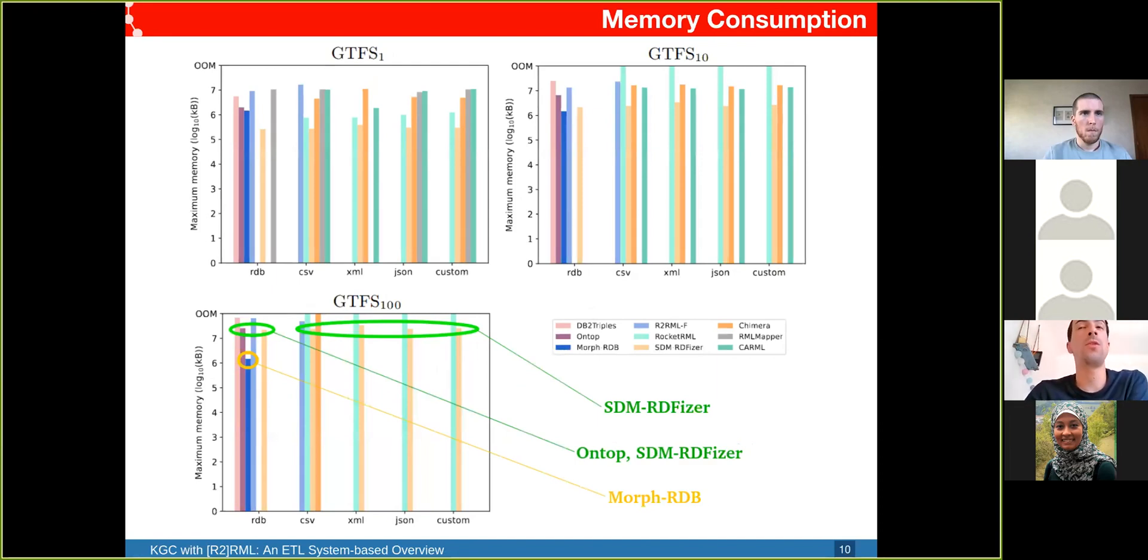For memory consumption, we measured it with the peak of maximum memory used. In scaling factor 100, Morph-RDB gave better results, but I put it in yellow because it is not very correct as we will see in the next slide. For relational databases, OnTop and SDM-RDFizer are the most memory efficient. For the other data formats, SDM-RDFizer got better results and is the only one able to materialize the data formats XML, JSON, and custom.